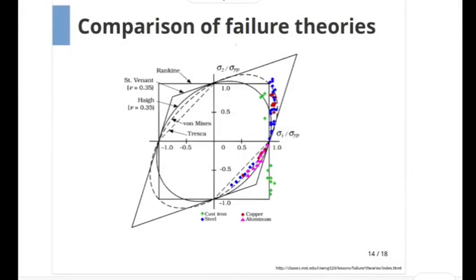There are different failure theories. The one which is most commonly used is the von Mises theory which is given in terms of this elliptical shape on the principal plane shown here. There are different failure theories used in different codes. Let us have a look at them.